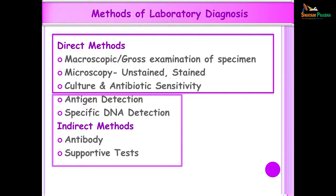Hi, I am Anju Kaggal and today I am going to be talking to you about Immunological and Nucleic Acid Amplification Tests for the Diagnosis of Infectious Diseases. In our previous lecture, these were the methods of laboratory diagnosis. There are direct methods and indirect methods, and in the previous lecture culture and antibiotic sensitivity tests were covered. Today we are going to be concentrating on antigen detection tests, specific DNA detection, indirect methods which involve detecting antibodies, and of course supportive tests.